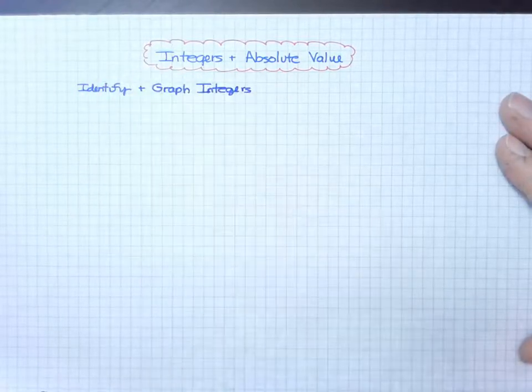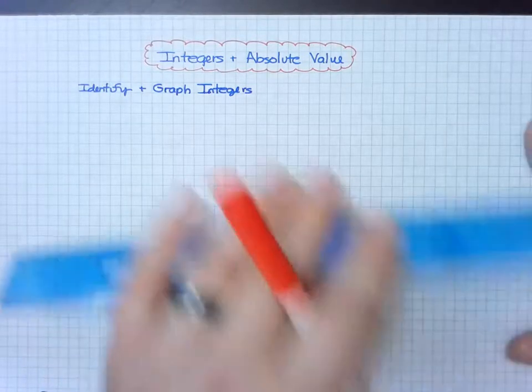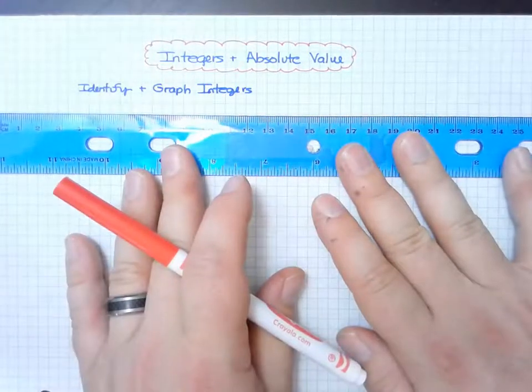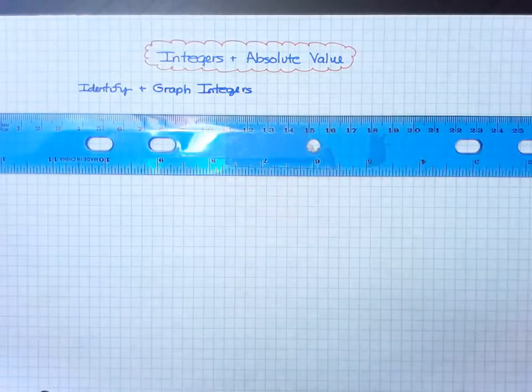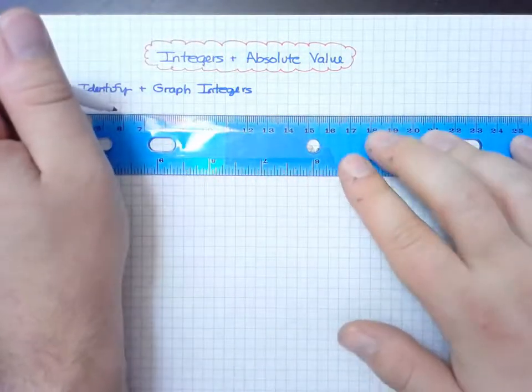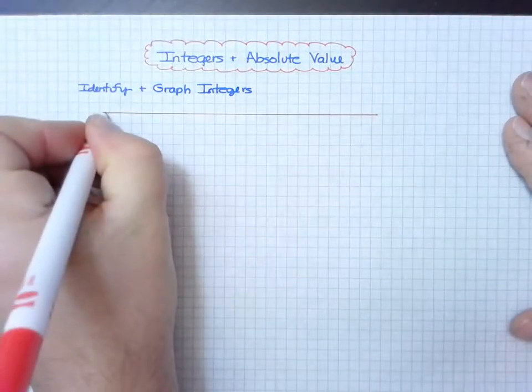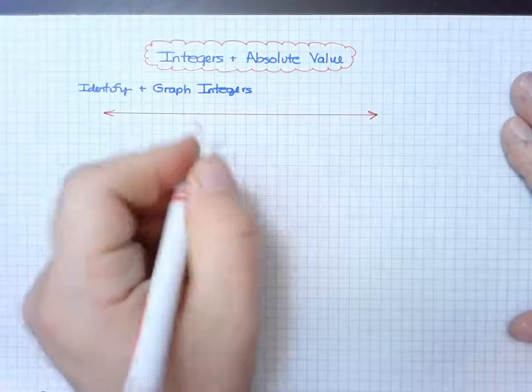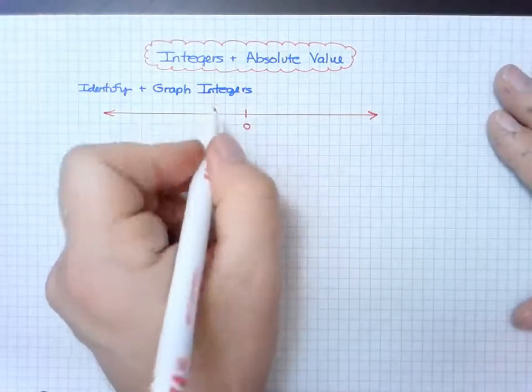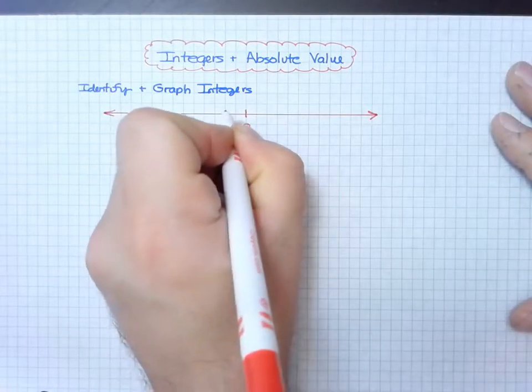It's helpful to start with the number line. I'm using my handy dandy straight edge - remember we want to use our tools and attend to our standards for mathematical practice, our SMPs. I want to go ahead and make a nice straight line. I usually like to start with zero in the center if I'm just making a number line from scratch.